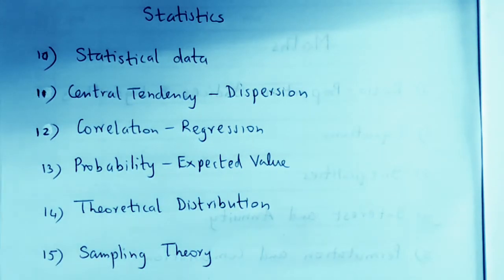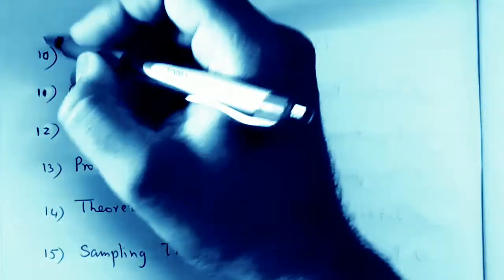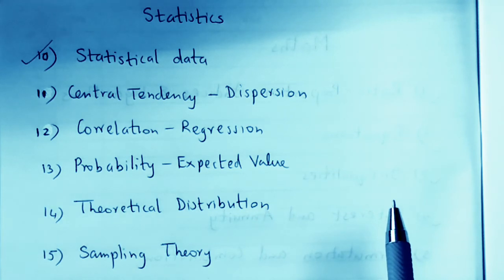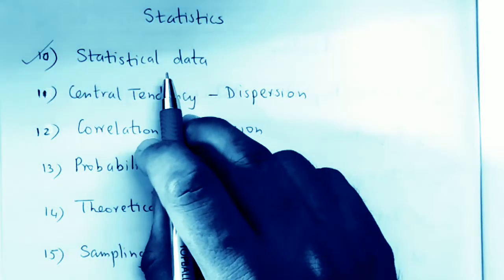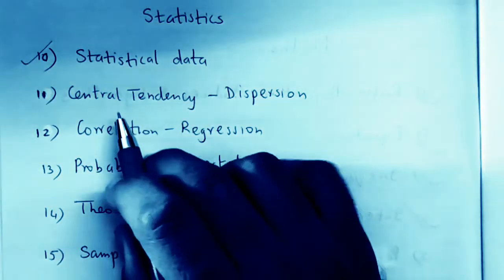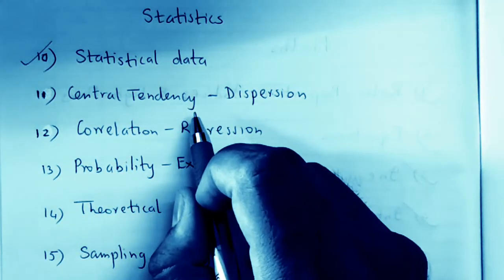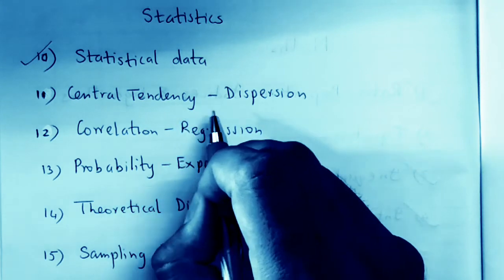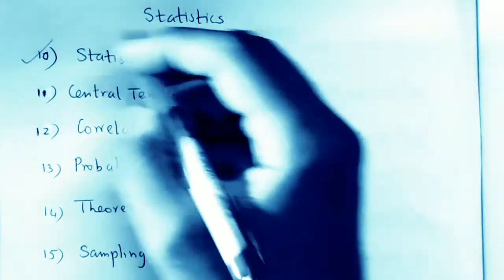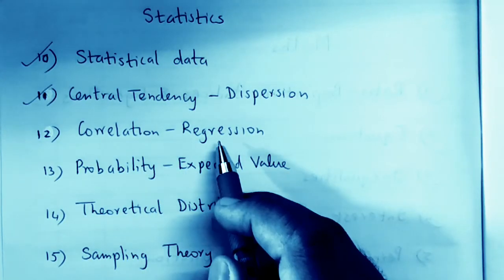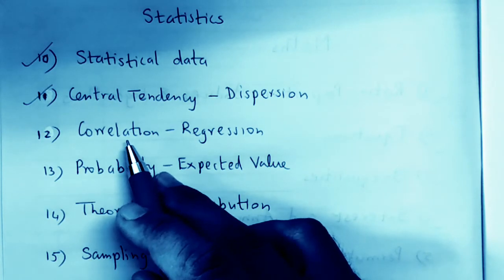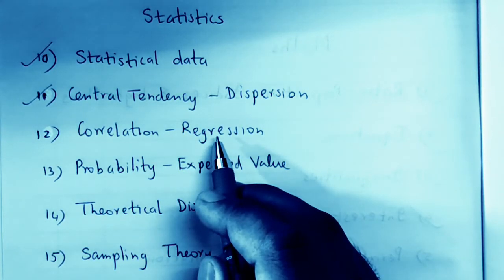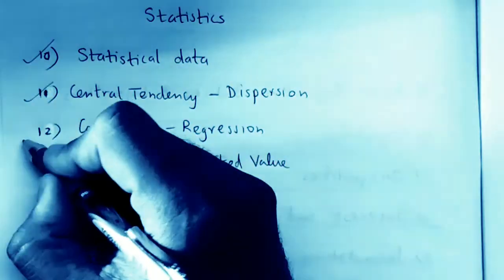Moving to the statistics section: the first chapter, Statistical Data, is purely theoretical and most questions are repeated, so do not leave this topic as an option. Likewise, Central Tendency and Dispersion — don't focus on four to five mark difficult questions; just do the basic sums. For Correlation and Regression, get through the theory very clearly first, and then it won't be difficult to understand.